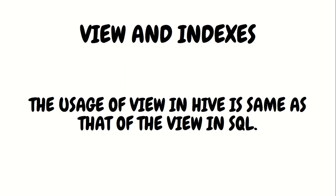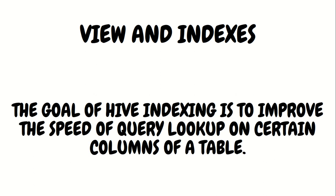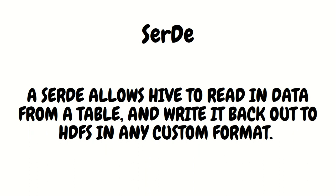Then we have views and indexes. A view has the same meaning and same syntax as in regular SQL, so the usage of view in Hive is the same as that of a view in SQL. Regarding indexes — indexes have actually been dropped in Hive now. In the newer version, Hive 3.x, we don't have indexes available, although the meaning of index is to improve the speed of query lookup on certain columns of a table. The last point is SerDe, which stands for serialization and deserialization. If you want to read data that is out of the box — for example, JSON data — we make use of SerDe. SerDe allows Hive to read data from a table and write it back to HDFS in any custom format.